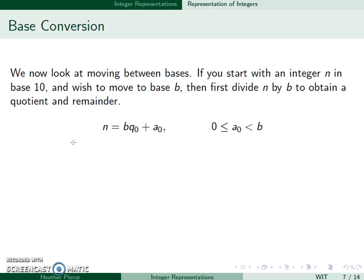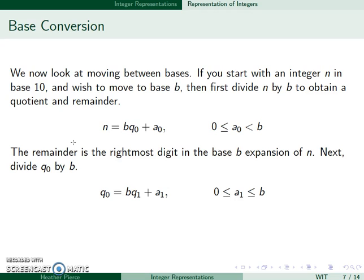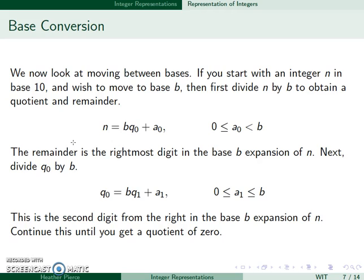Let's now look at moving between bases. If I start with an integer N in base 10 and I want to move to base b, I divide N by b and obtain a quotient and remainder. The remainder is the rightmost digit in our expansion. We then take our quotient and divide that by b, and this is the second digit. We continue this until we get a quotient of 0.